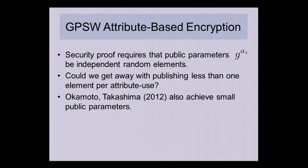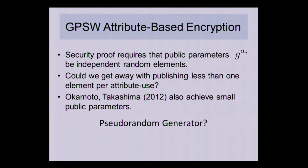This is a question that Okamoto and Takashima addressed with a smaller version of public parameters in 2012 for ABE using different methods, but we're interested in seeing if there's a small tweak we can apply to an existing scheme like GPSW that might also be usable in other instances.